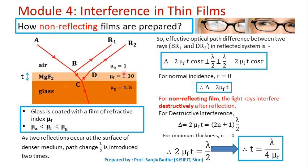To calculate the thickness of the thin film required to be coated on the glass surface to get a non-reflecting film, we write the optical path difference between ray BR1 and ray DR2 in the reflected system. Geometrically, this optical path difference is obtained as 2μ_f·t·cos R, where μ_f is the refractive index of the film.